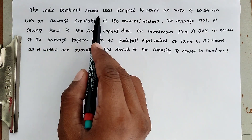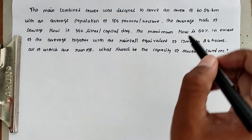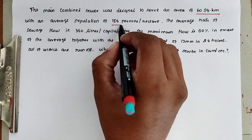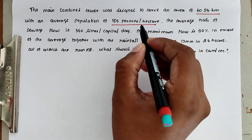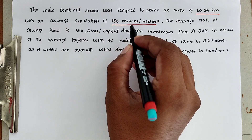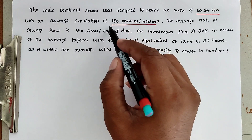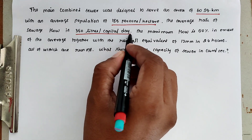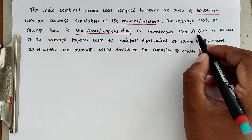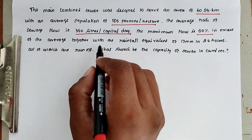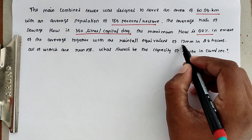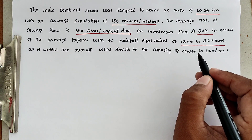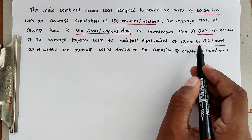The problem is: the main combined sewer was designed to serve an area of 60 square kilometers with an average population of 185 persons per hectare. The average rate of sewage flow is 130 liters per capita per day. The maximum flow is 50% in excess of the average, together with the rainfall equivalent to 12 mm in 24 hours, whenever the rainfall — 50% of rain water is excess — the rainfall is 12 mm in 24 hours.